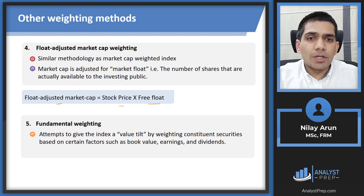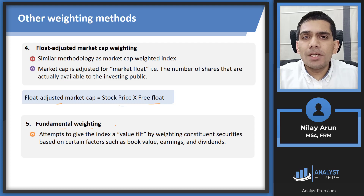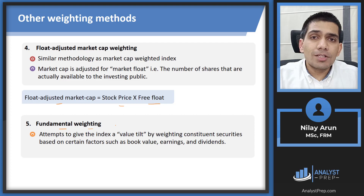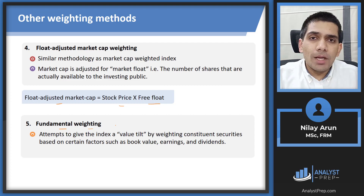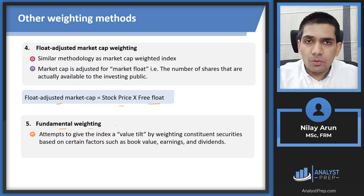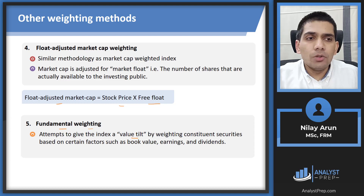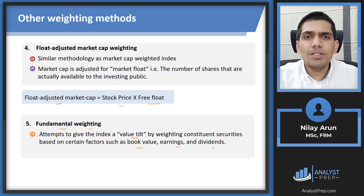Finally, the last method is fundamental weighting. This means using a particular fundamental factor to calculate the weights for all constituent securities — for instance, the PE ratio or PB ratio. The weight given to any security is based on how much that factor is in relation to the total. It attempts to give the index a value tilt by weighting constituent securities based on factors such as book value, earnings, or dividends.